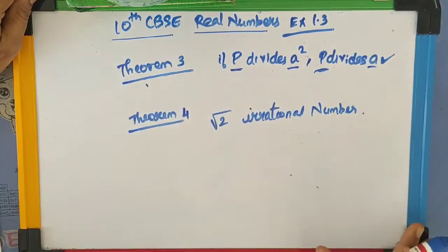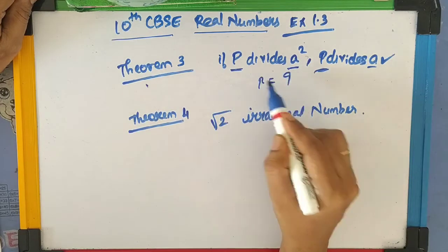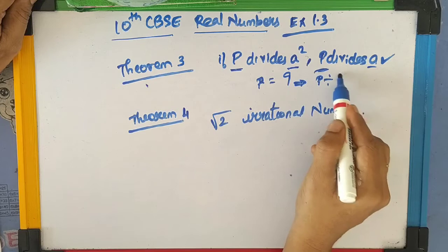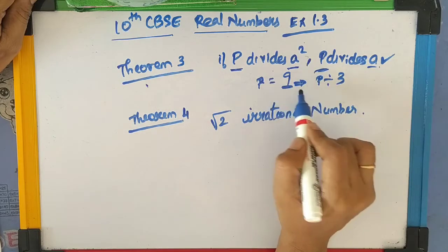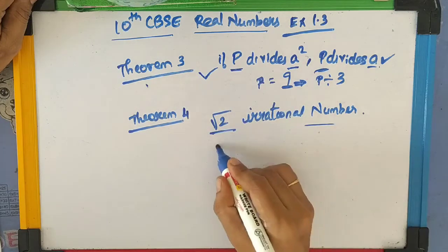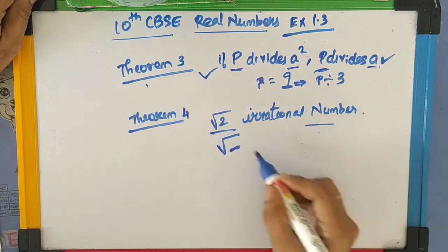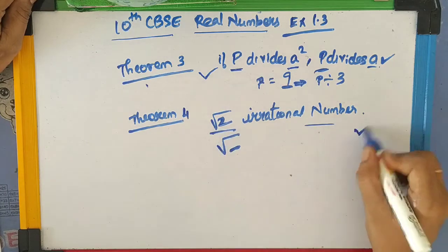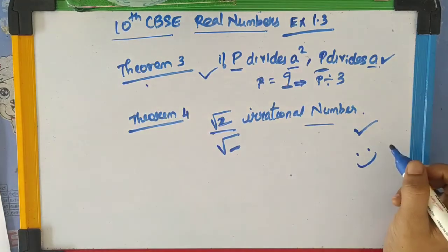Theorem 3 states that if P divides A squared, then P divides A. For example, if P divides 9, then P divides 3. If P divides 16, then P divides the square root of 16, that is 4. Theorem 4 states that square root of 2 is an irrational number. Now with this, we are going into the exercise.